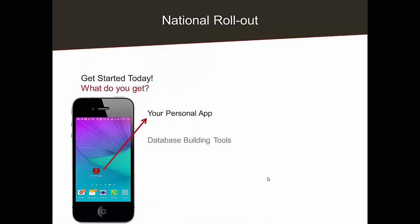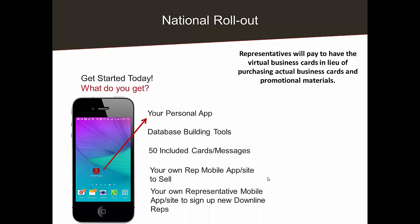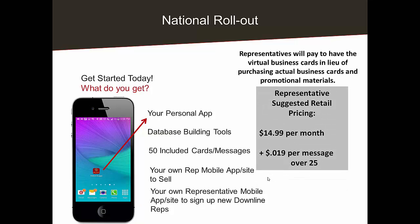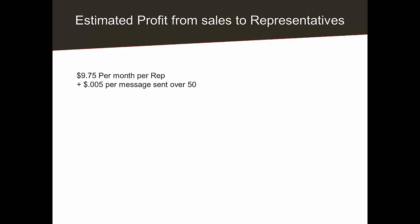They get all this — the personal business card, the database building tools, 50 included business cards per month — and it's $14.99 a month. You compensate your reps for it and it becomes a product with a product SKU. If they get their new reps to buy it — which they should, because it's the best business building tool you can have — then they make commission on it.